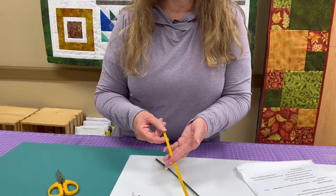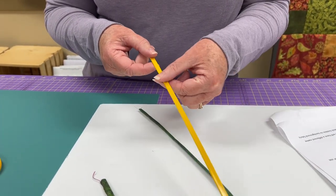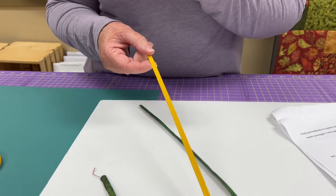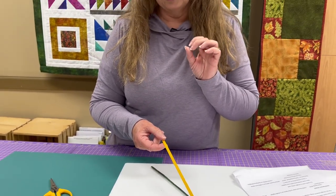So to work with a pressing bar, these are sometimes called bias bars, you may see them called loop pressing bars, but they are a heat resistant plastic that you can press on top of. Now for the project behind me, we needed a quarter inch wide stem.